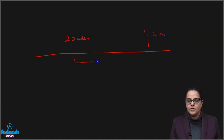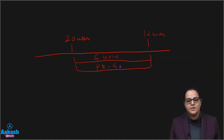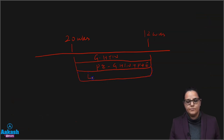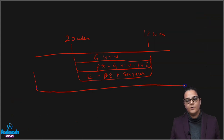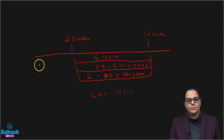To summarize: if we draw a timeline with 20 weeks and 12 weeks postpartum as markers — gestational hypertension appears after 20 weeks and resolves before 12 weeks postpartum; preeclampsia is gestational hypertension plus protein in urine or end organ damage; eclampsia is preeclampsia plus seizures. Chronic hypertension spans before 20 weeks of pregnancy through beyond 12 weeks postpartum.